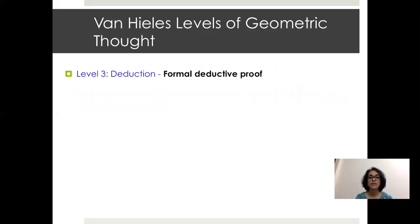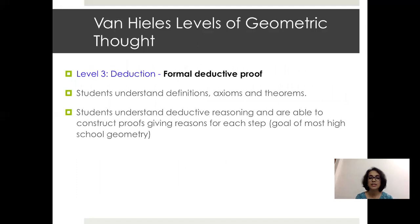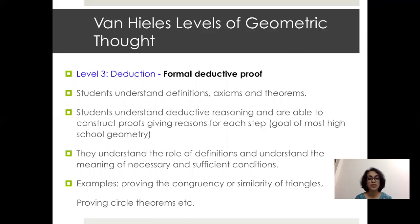Level three is the deduction level — the formal deductive proof level. Here students can do formal argumentation and arrive at proof. They understand definitions, axioms, and simple theorems. They understand deductive reasoning and can construct proofs giving reasons for each step. This becomes a very important goal for high school geometry — by class 9, students are expected to prove theorems and provide reasoning. They understand necessary and sufficient conditions, and can prove congruency and similarity of triangles, circle theorems, and theorems about quadrilaterals.